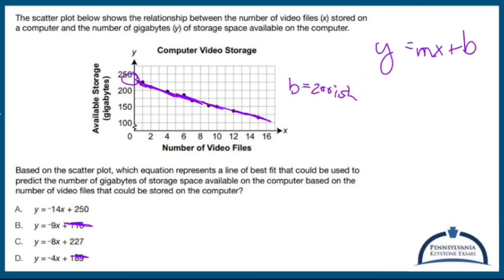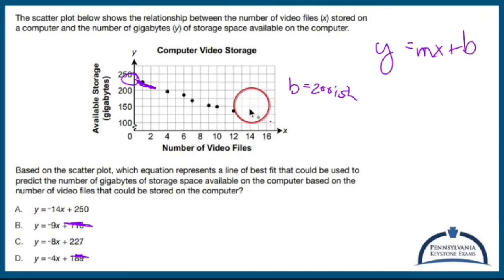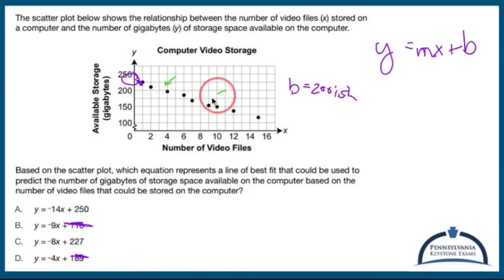I'm going to say b is around 200-ish. Now I need to find my slope, and I have to be a lot more careful here. I'm going to pick two points that look promising — points that my line of best fit pretty much hits — and use those to calculate the slope.